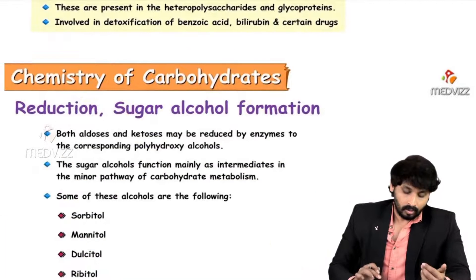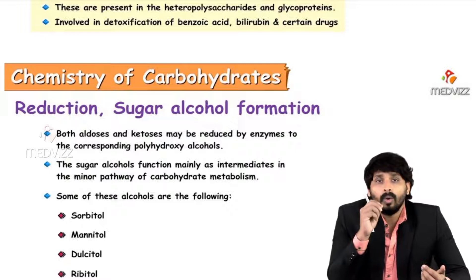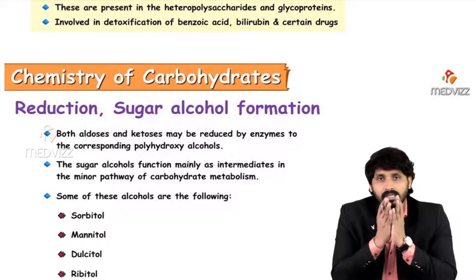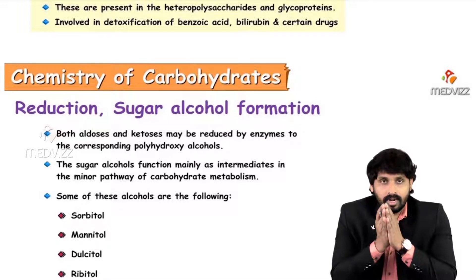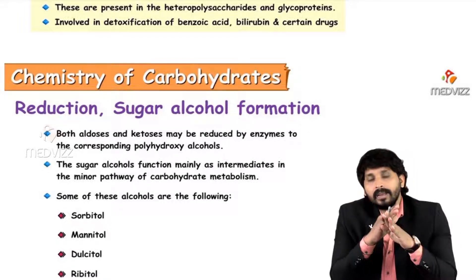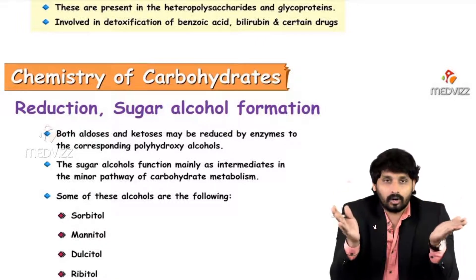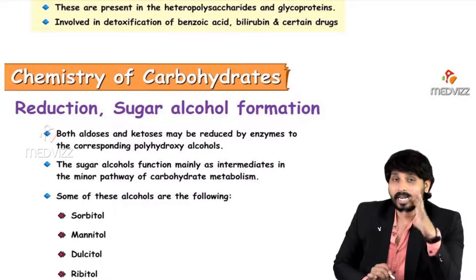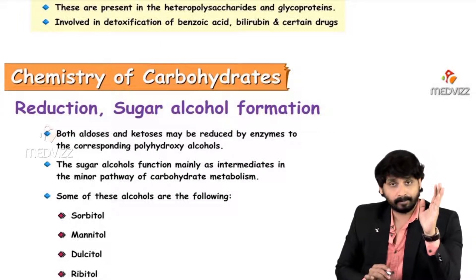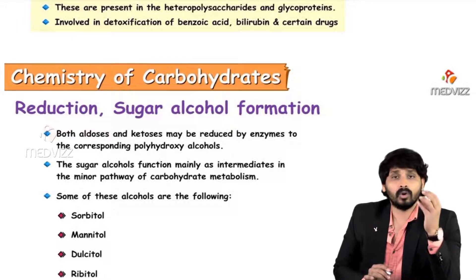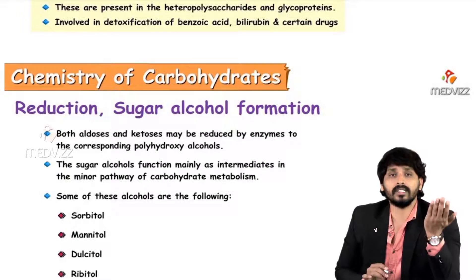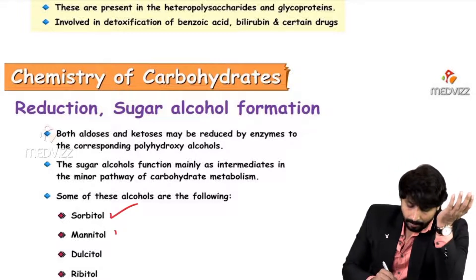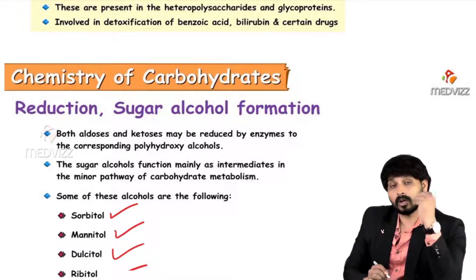For the reduction property: both aldoses and ketoses are reduced by enzymes to form corresponding polyhydroxy alcohols — that is, sugar alcohols. They function mainly as intermediates in minor pathways of carbohydrate metabolism, such as fructose metabolism and galactose metabolism. In these pathways, polyhydroxy alcohols serve as key intermediates.